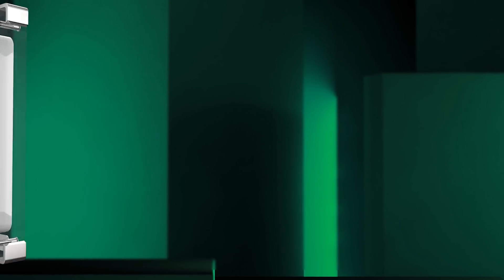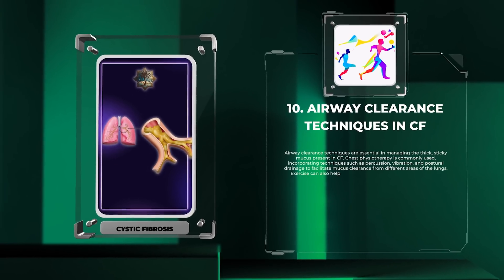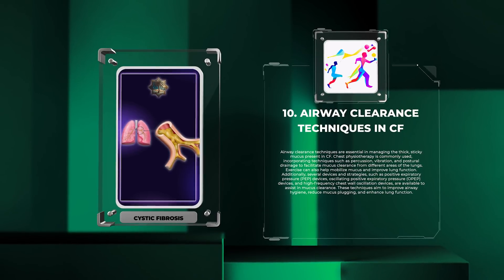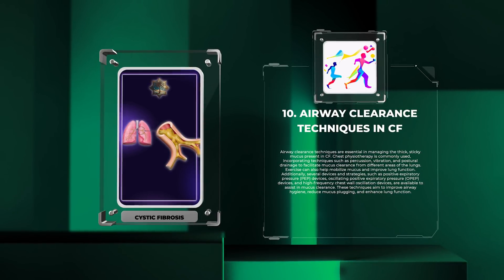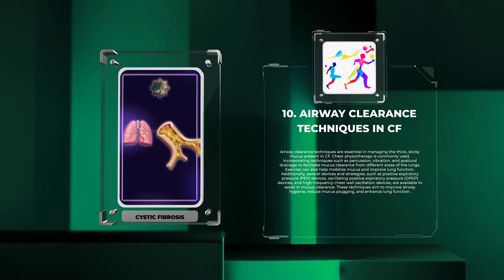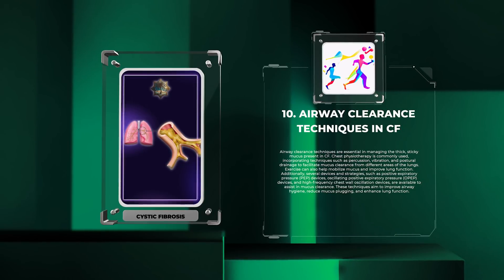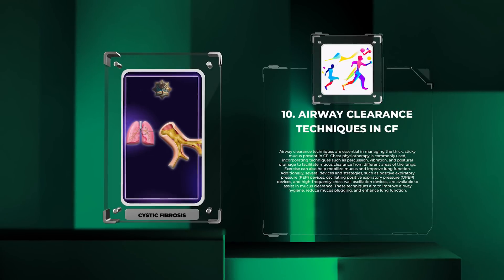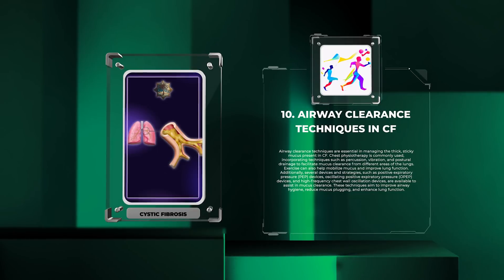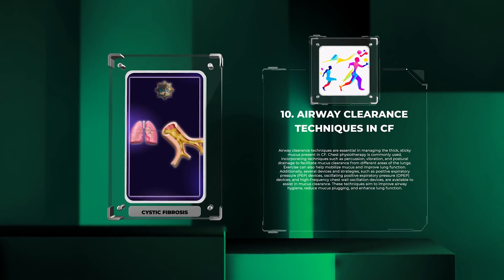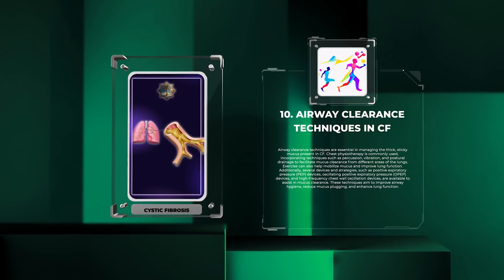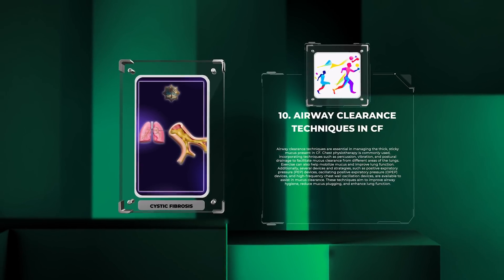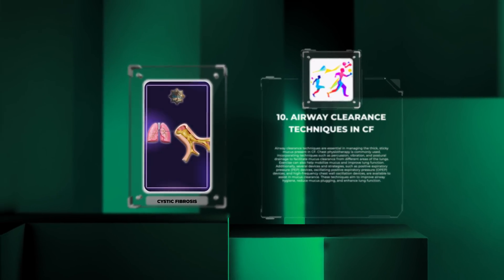Airway clearance techniques are essential in managing the thick, sticky mucus present in CF. Chest physiotherapy is commonly used, incorporating techniques such as percussion, vibration, and postural drainage to facilitate mucus clearance. Exercise can also help mobilize mucus and improve lung function. Several devices are available, including positive expiratory pressure (PEP) devices, oscillating positive expiratory pressure (OPEP) devices, and high-frequency chest wall oscillation devices. These techniques aim to improve airway hygiene, reduce mucus plugging, and enhance lung function.